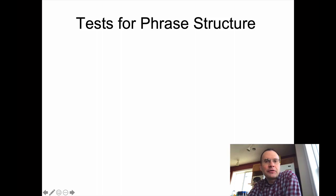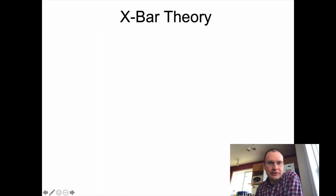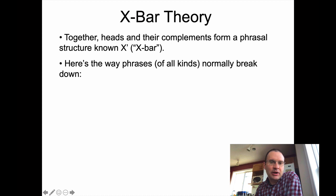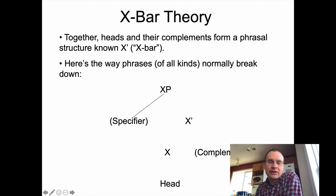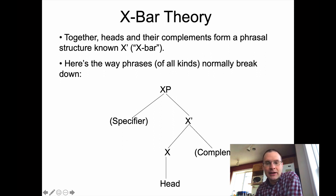We've talked a little bit about phrase structure. Going back to the previous slide, we talked about this X-bar structure where we have a whole phrase breaking down into two components: a specifier and the X-bar part. The X-bar part then breaks down into X and a complement, with X being the head of the phrase. This applies to different kinds of phrases — noun phrases, verb phrases, and so on.